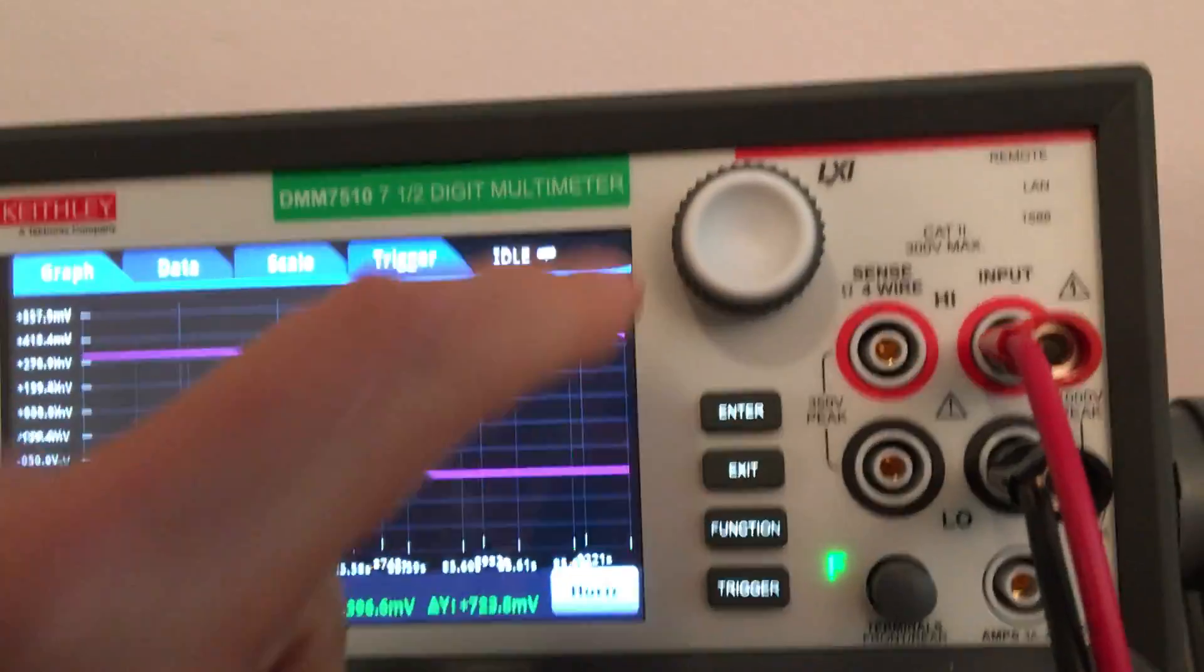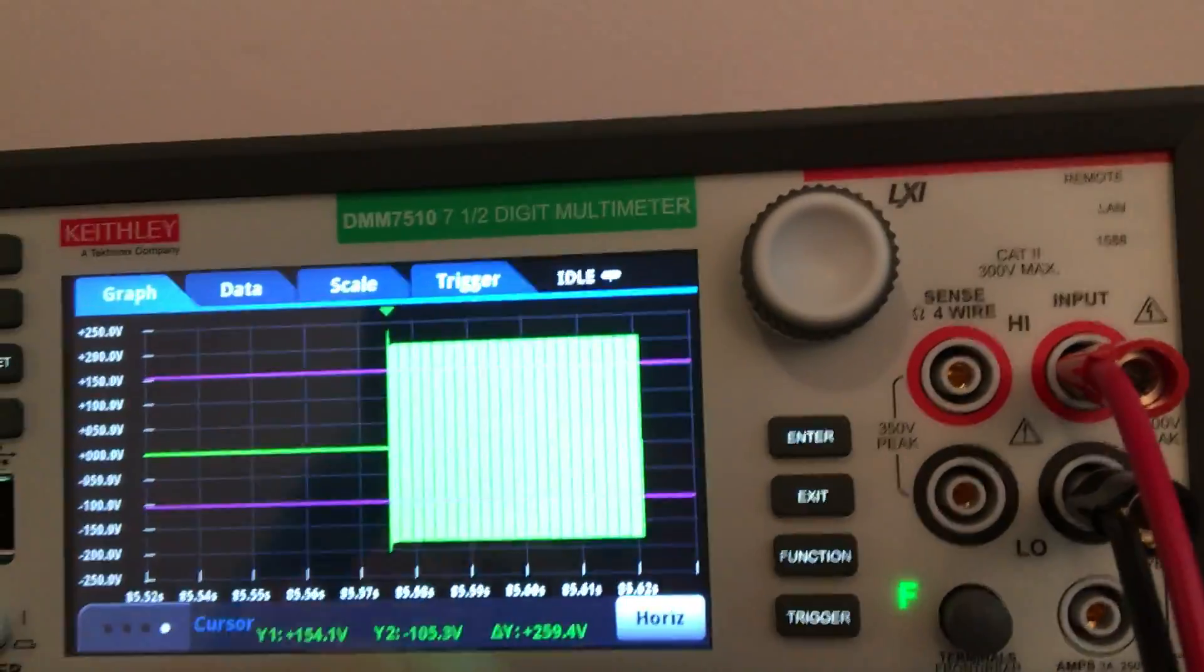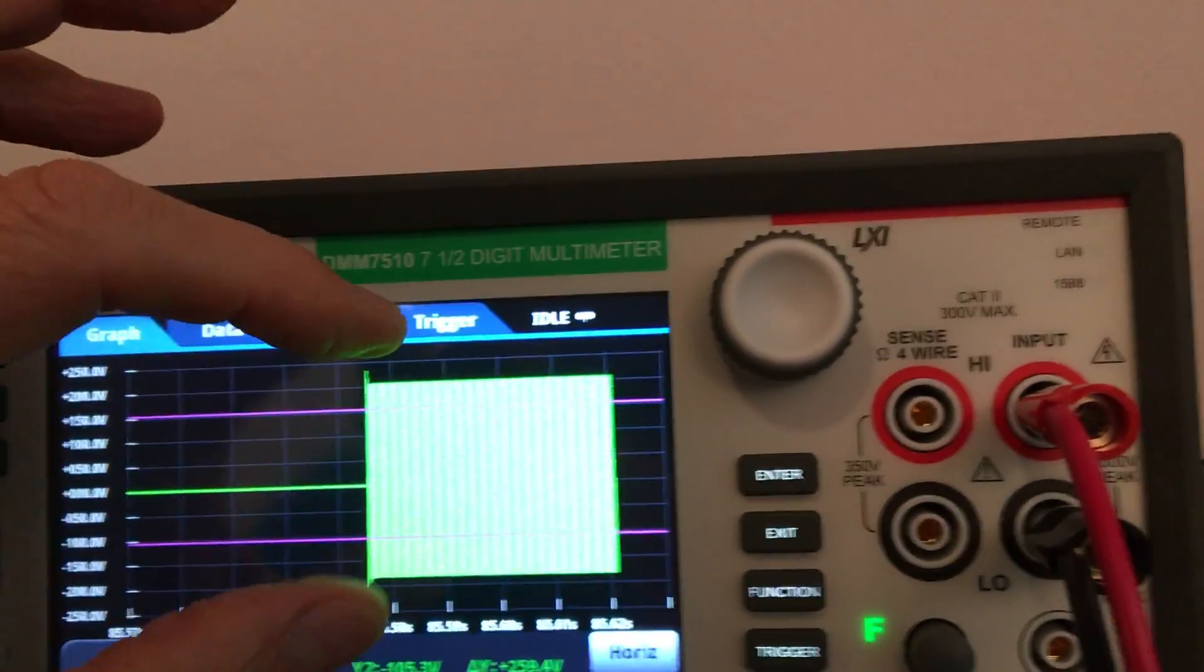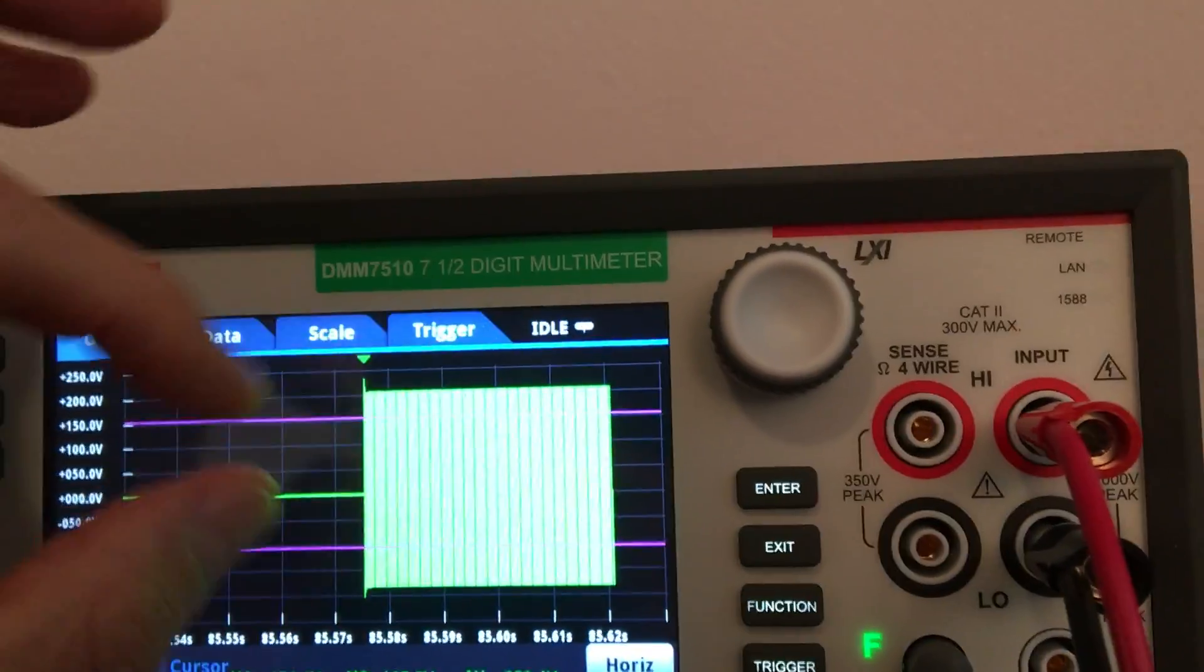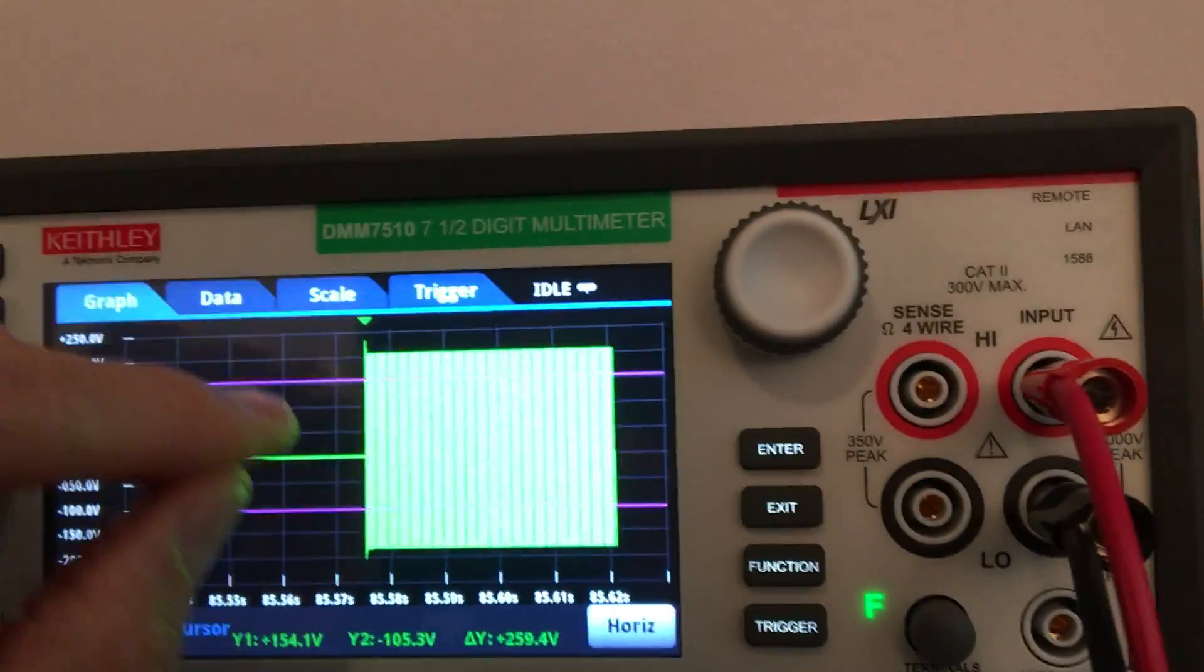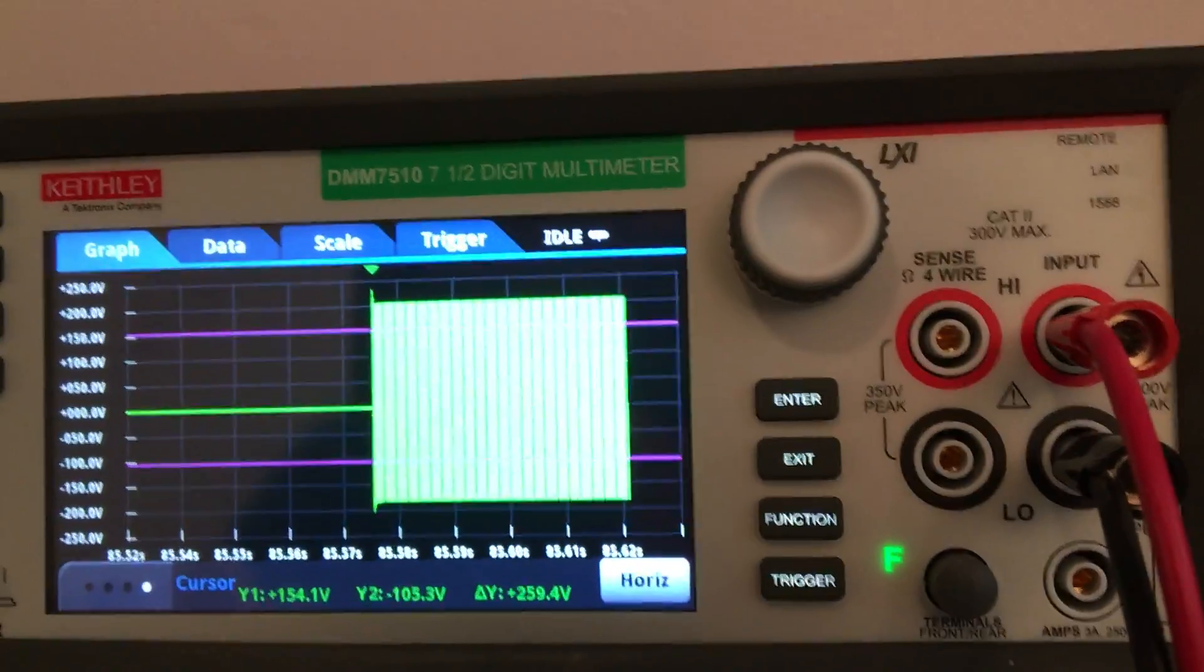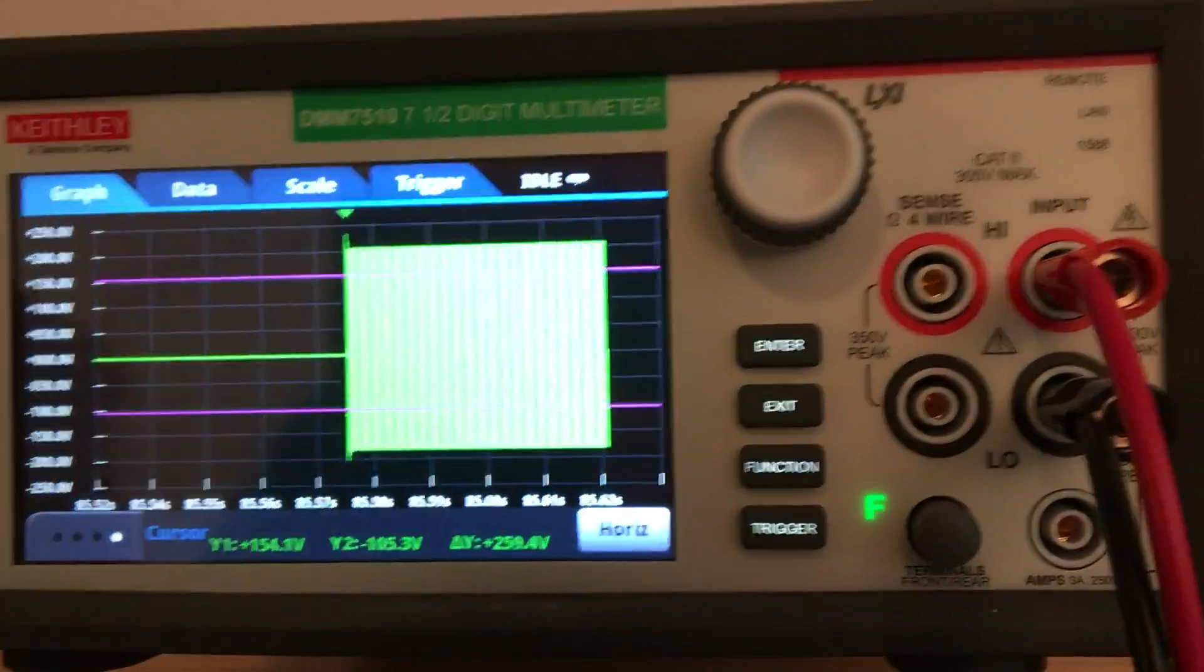So in one measurement, because of the 18-bit A-to-D converter, we have a lot of dynamic range. We can resolve a 400-volt measurement and at the same time a less-than-one-volt measurement in one acquisition. I think that's pretty impressive.